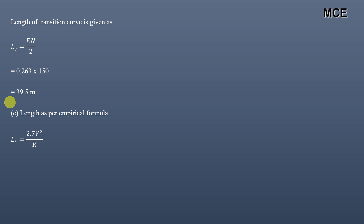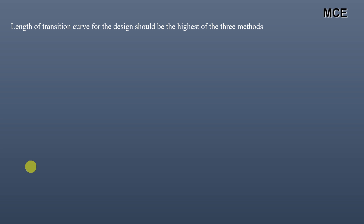The length according to the third method — the IRC empirical formula — is L = 2.7 × V² / R, where V is in km/h. Substituting V = 60 km/h and R = 200 m: L₃ = 2.7 × 60² / 200 = 48.6 meters.